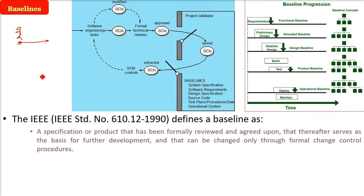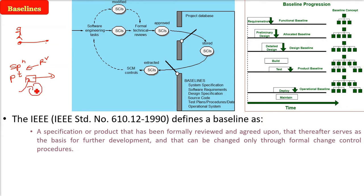A baseline is a specification or a product that has been formally reviewed and agreed upon. This is very important — formally reviewed and agreed upon. It serves as the basis for further development and can be changed only through formal change control procedures. You cannot just change it by yourself. These are called baselines.